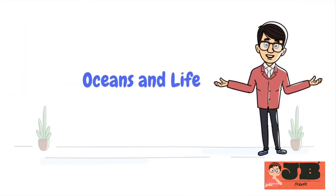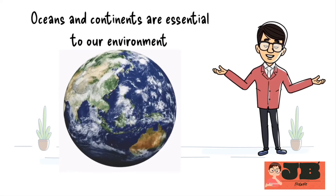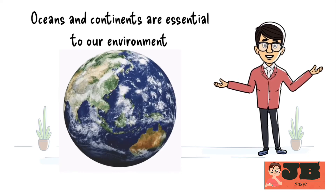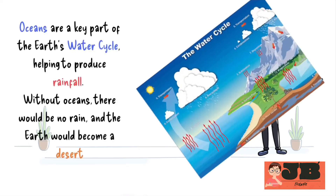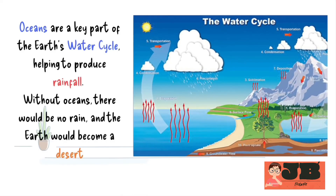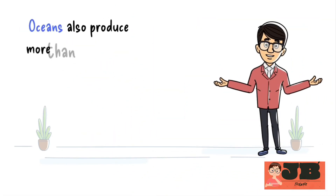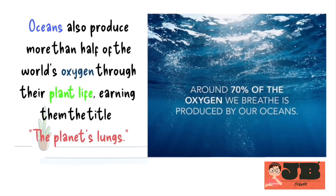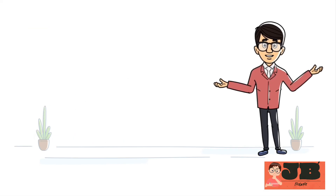Let's discuss oceans and life. Oceans and continents are essential to our environment and influence many aspects of our lives, even if we don't always realize it. Oceans are a key part of the Earth's water cycle, helping to produce rainfall. Without oceans, there would be no rain, and the Earth would become a desert. Oceans also produce more than half of the world's oxygen through their plant life, earning them the title 'the planet's lungs.' Oceans have had a significant influence on humanity throughout history — people have used them for migration, trade, military campaigns, and as a vital source of food through fishing.